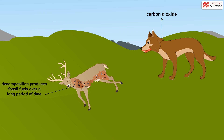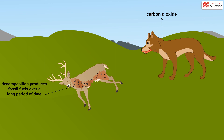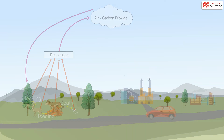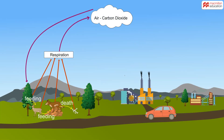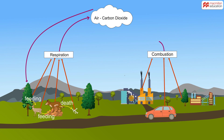Fuels such as coal and oil were formed from the partial decomposition of plants and animals in prehistoric times. People are now burning these at such an alarming rate that the carbon dioxide content of the air is increasing,